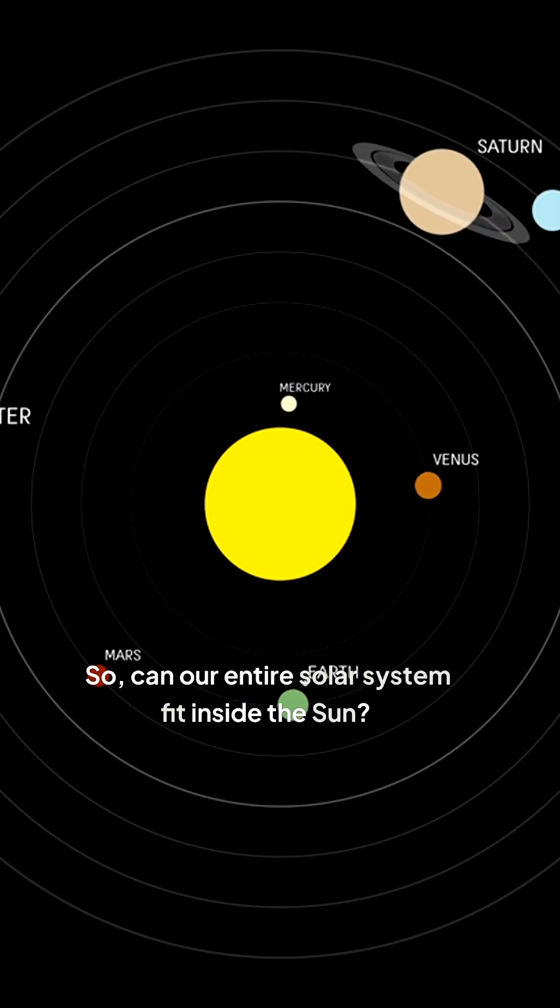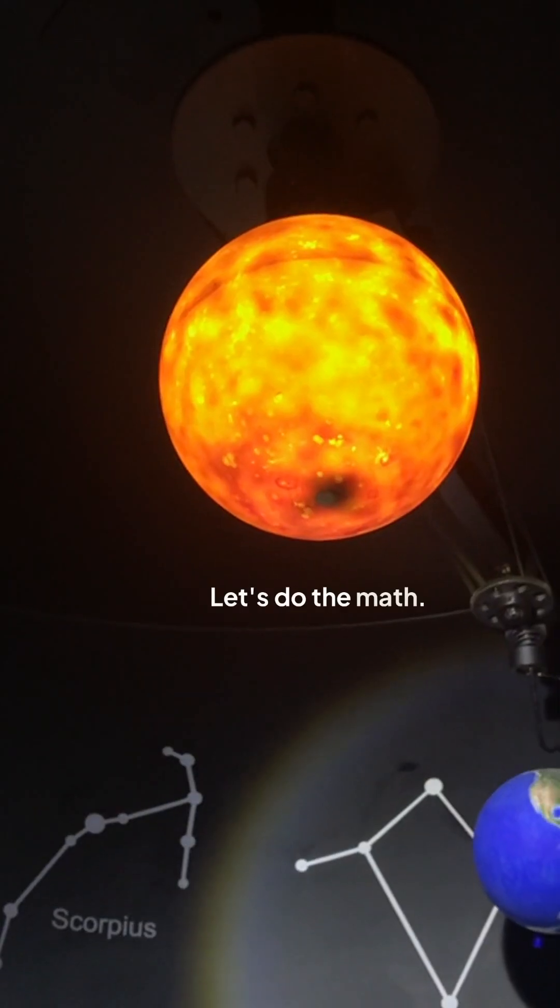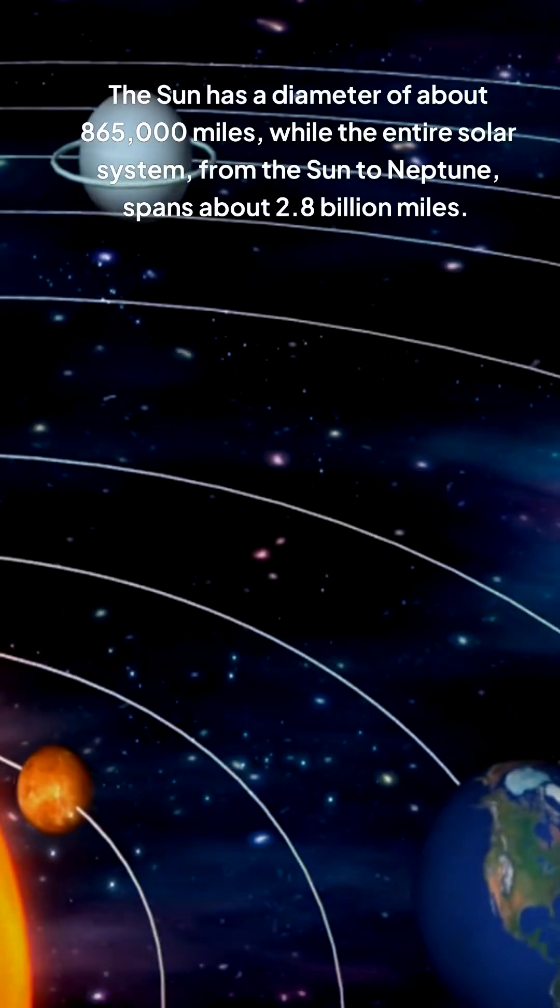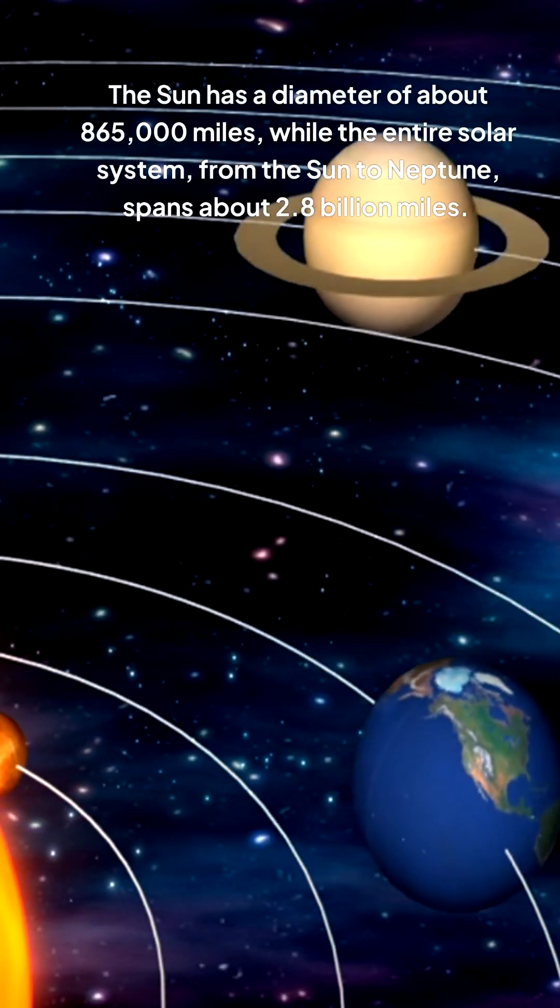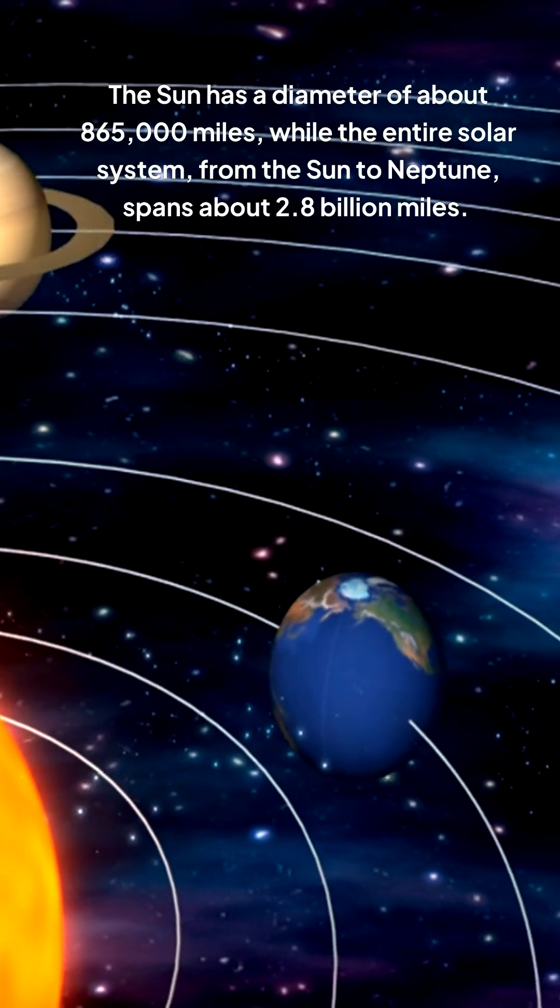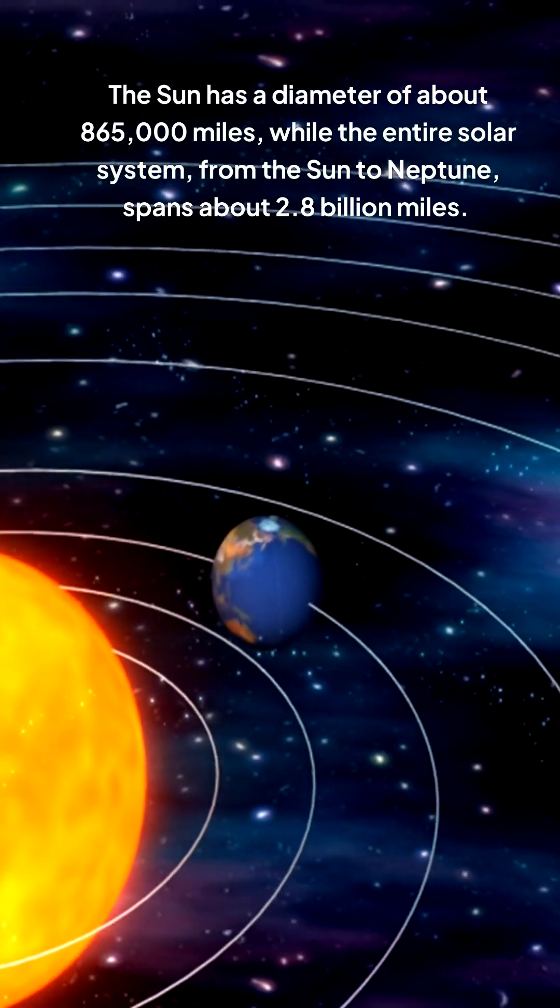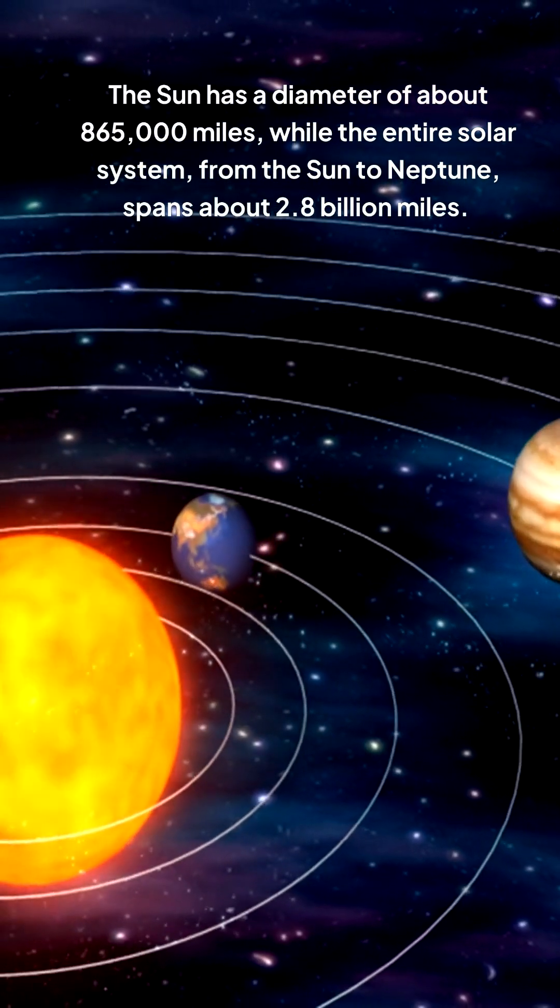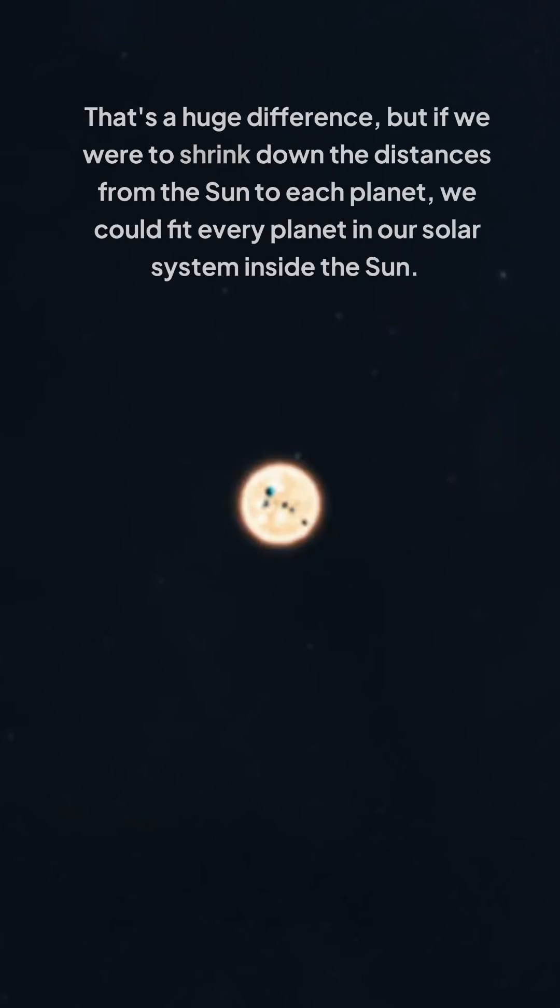So can our entire solar system fit inside the sun? Let's do the math. The sun has a diameter of about 865,000 miles, while the entire solar system, from the sun to Neptune, spans about 2.8 billion miles. That's a huge difference. But if we were to shrink down the distances from the sun to each planet, we could fit every planet in our solar system inside the sun.